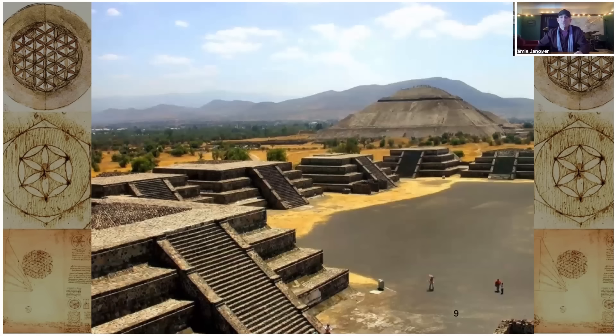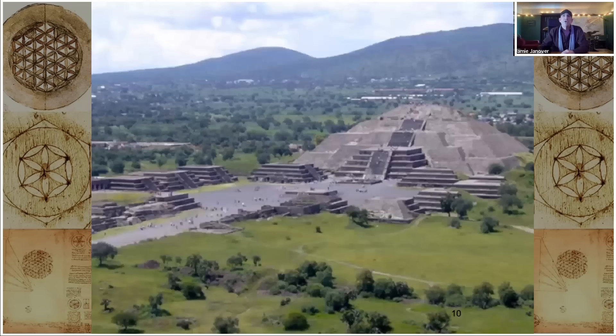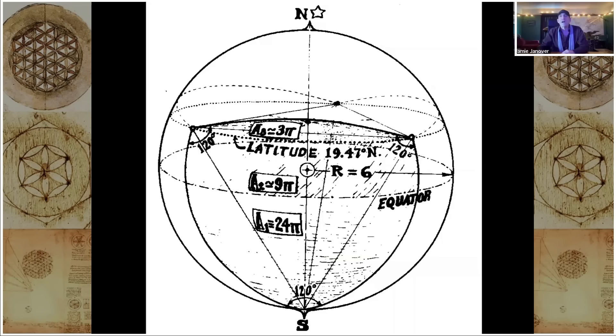This is Teotihuacan in Mexico, near Mexico City, 100 kilometers away. And these structures look similar to Chichen Itza in the sense that they're step pyramids. And they're arranged in very specific ways. It's fascinating to see that the city of Teotihuacan is at this latitude, 19.47 degrees. And this is a significant latitude because talk about fundamental.